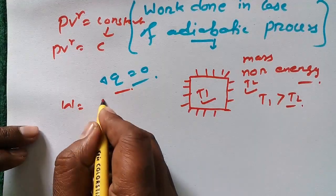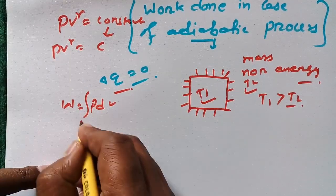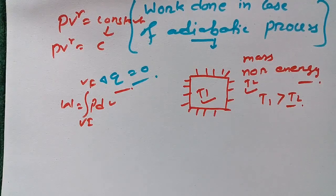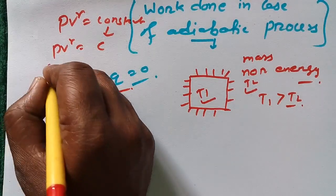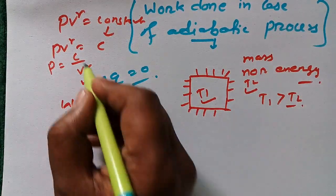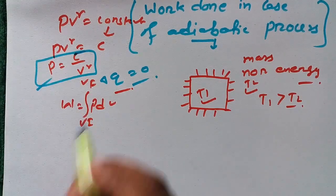We know W equals integral P dV. Let's make this integration from initial volume VI to final volume VF. Now we can write, instead of P, P equals C upon V to the power gamma. So we are going to put the value of P here.